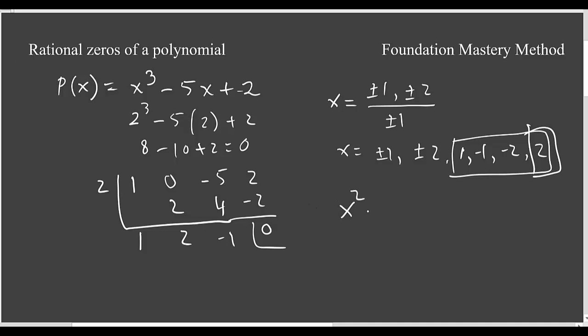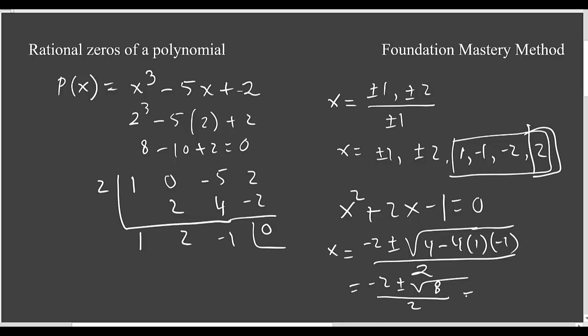What is remaining for the other two zeros? 1x² + 2x - 1 = 0. This is a quadratic form, you cannot factor this one, so let's try the quadratic formula. In the quadratic formula, -b (b is 2), so -2 ± √(b² - 4ac) over 2a, where a is 1. You're getting finally -2 ± √8 over 2.